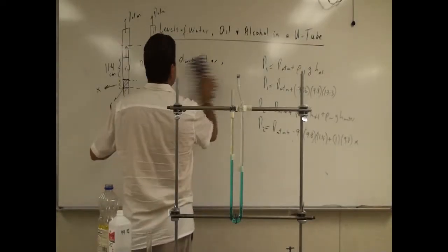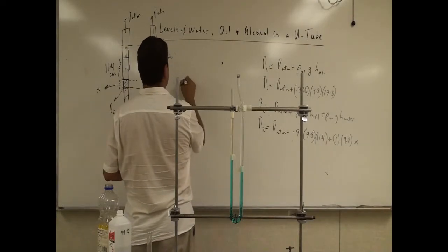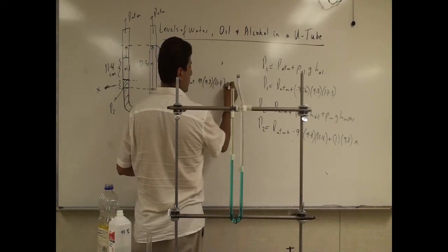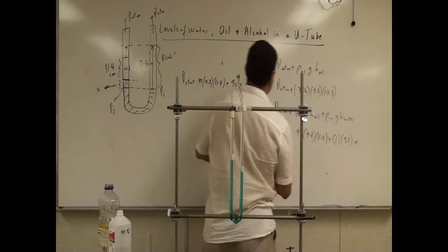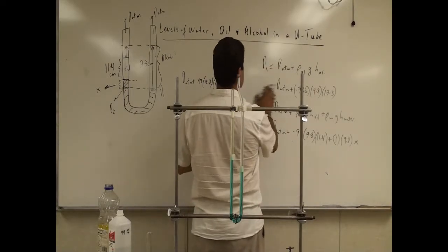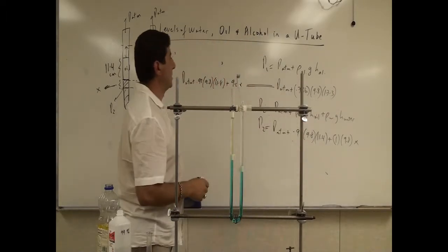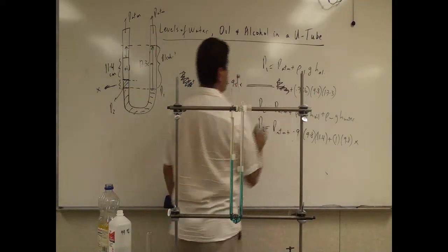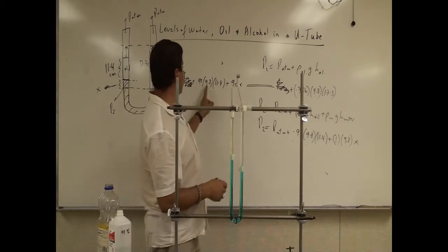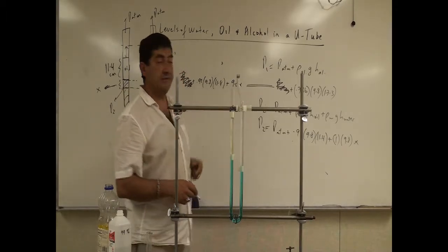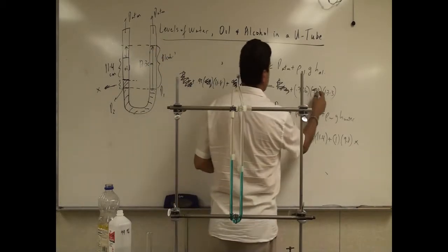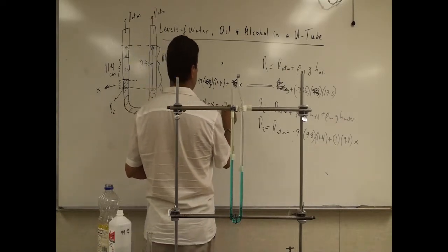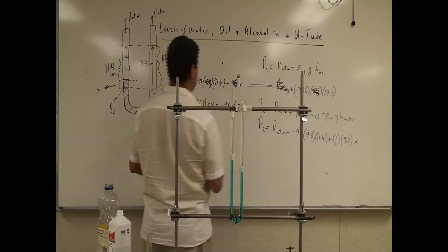Setting the two pressures equal: P-atmosphere plus 0.92 times 9.8 times 11.4 plus 9.8x equals P-atmosphere plus 0.786 times 9.8 times 17.3. Notice P-atmosphere cancels, and gravity (9.8) also cancels, so you basically get: 0.92 times 11.4 plus x equals 0.786 times 17.3.